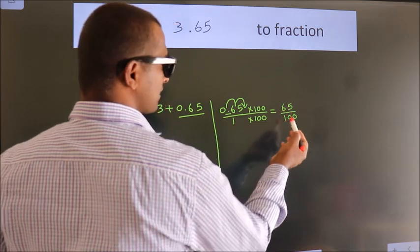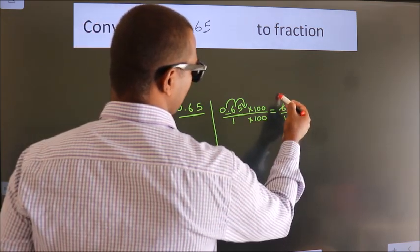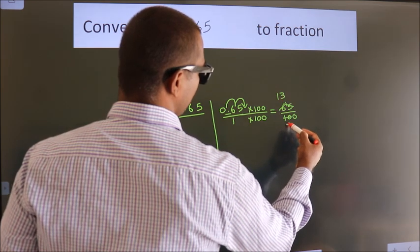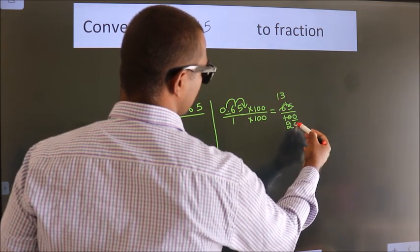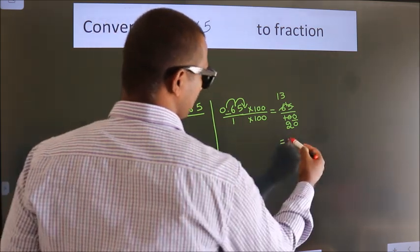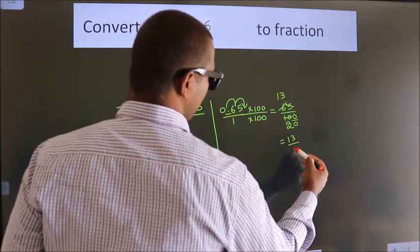Now we cancel with 5. 5 ones, 5 threes, 5 twos. This zero as it is down. So the fraction we got is 13 by 20.